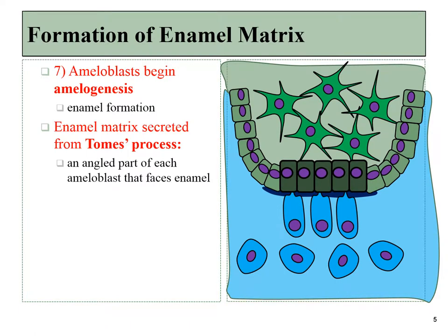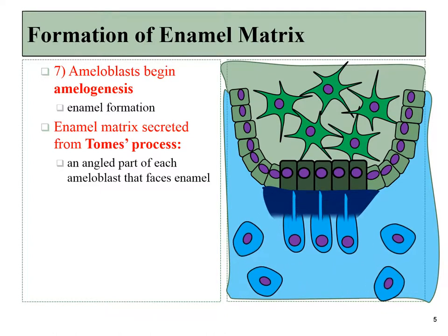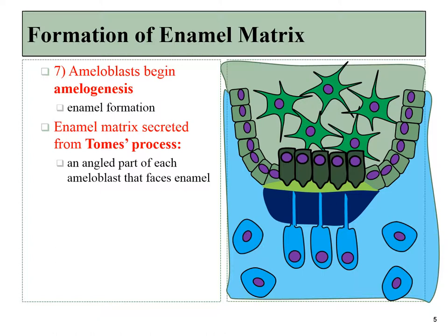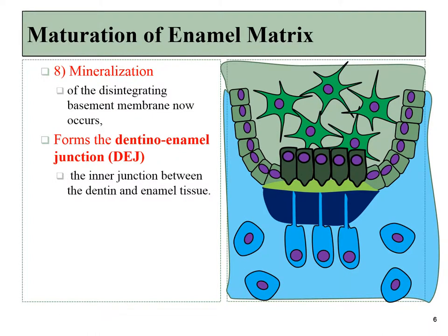Those ameloblasts begin secreting enamel from a structure called Tomes process — this little bump at the bottom of the ameloblasts. Remember, dentin formation had already begun, so the layer of enamel will always be a little bit thinner than the layer of dentin. The enamel is secreted in an immature state, and it mineralizes later as the ameloblasts begin pumping calcium and phosphate, which will crystallize within the immature enamel to form the mature material. We have now formed the dentino-enamel junction, a contact between enamel and dentin.